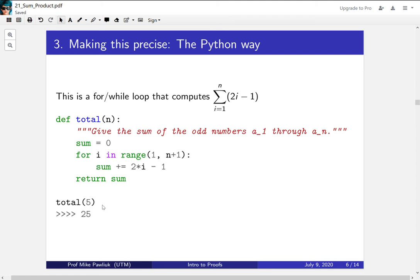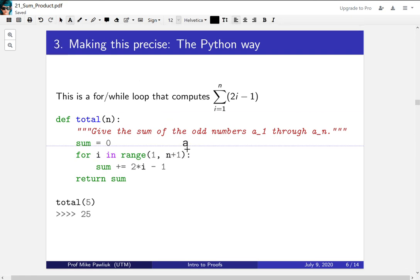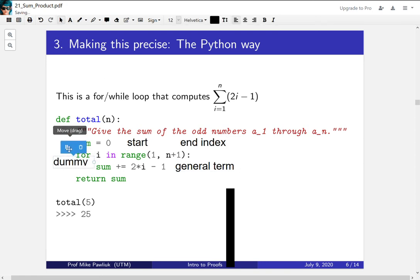So for example, if we took this function of 5, so we added up 5 terms, this would output 25, as we saw in the warm-up. So again, let's take a moment to compare these things. So here, n plus 1 is the end index, with a slight shift because of Python. This is the start index. i is the dummy variable. So what we can see is that this is very similar to sigma notation, where we had the start index, the end index, the dummy variable, and the general term. It's just written in a slightly different way. If you're not a CS person, don't worry too much about this. But if you are a CS person, hopefully this clicks a little more for you.